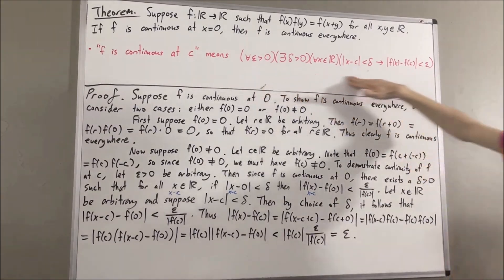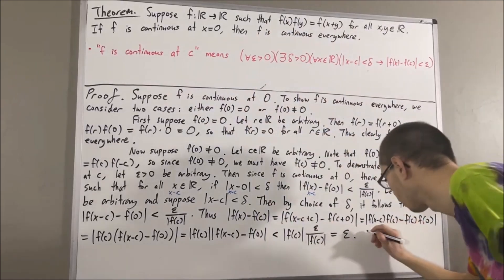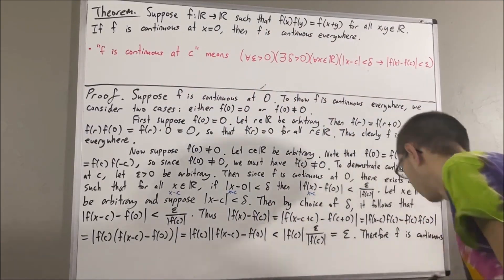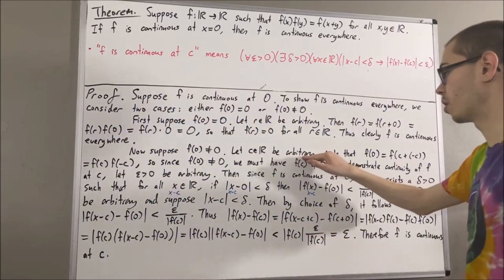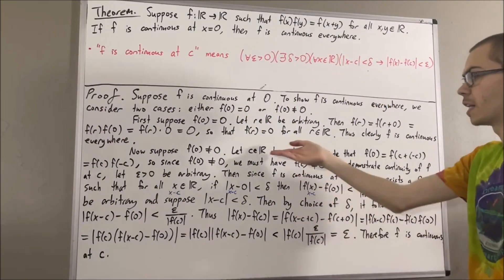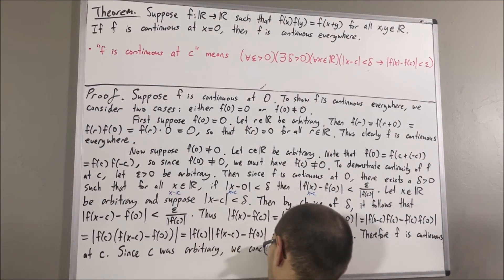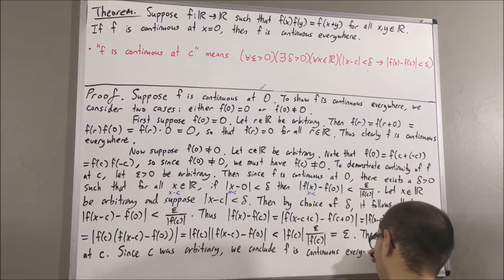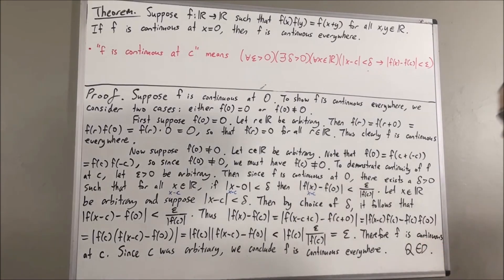We have proven the continuity statement, which proves that f is continuous at c. Since c was an arbitrary real number, f is continuous everywhere — this argument works for any real number c. This completes the proof, and that's it for this video.